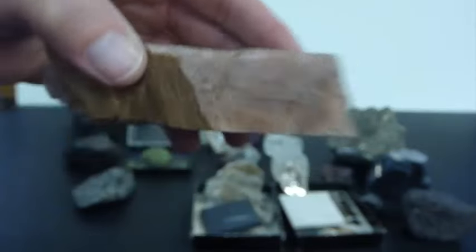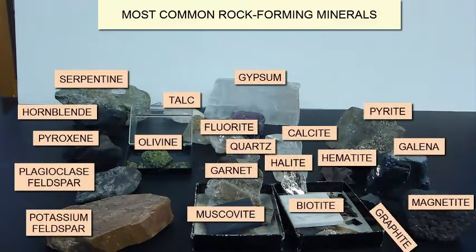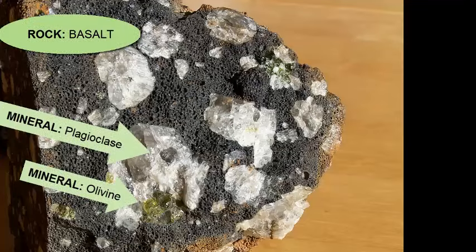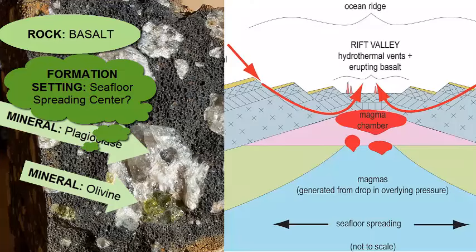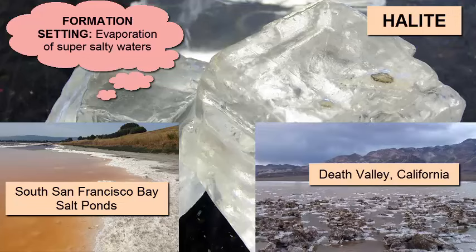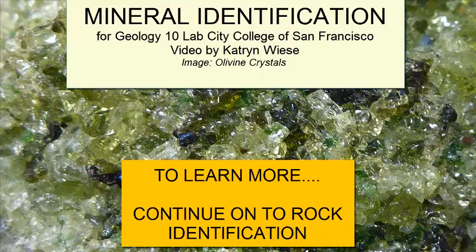The goal of mineral identification is to recognize these minerals again later in rocks, and based on that recognition, to describe something about the formation history and geologic setting of the rock. In our future videos on identifying rocks, you will learn more about what each mineral tells us and what clues they hold. For example, halite forms only when salty waters evaporate, so if we see halite in a rock, we know the rock must have formed at Earth's surface in a setting like South San Francisco Bay or Death Valley, where there is salty water pooling in shallow ponds and evaporating in a hot, dry climate. That's a lot of information to glean from the identification of one mineral. Continue with our rock identification videos to learn more.